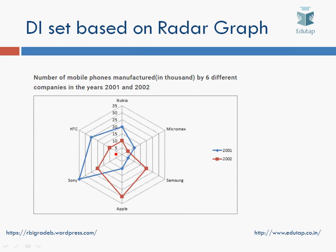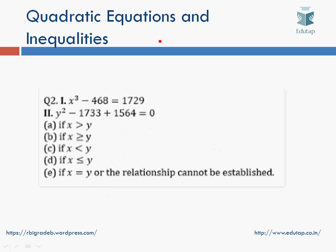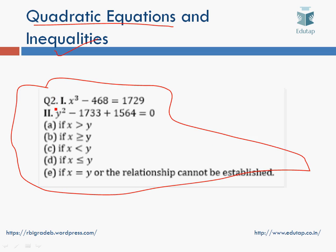Here is an example of a radar graph — this is what a radar graph looks like. It shows the number of mobile phones manufactured in thousands by six different companies (Sony, HTC, Nokia, Micromax, Samsung, Apple) in 2001 and 2002, with blue representing 2001 and red representing 2002. Quadratic equations and inequality questions were asked prior to 2015, and since the last two years such questions have not appeared — but you should still prepare these topics.